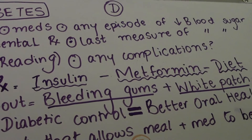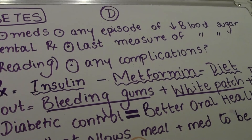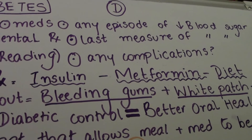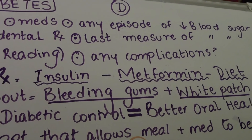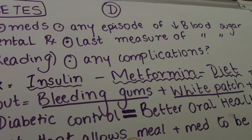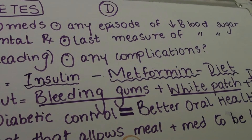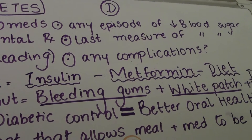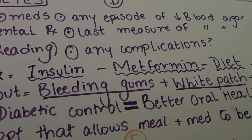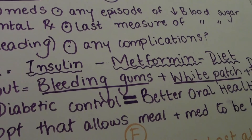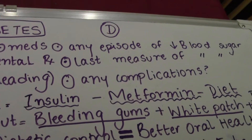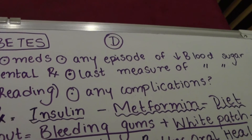Ask if they've developed any complications during any dental treatment because of the diabetes. With diabetes, patients are more prone to developing dry socket and impaired wound healing. So if they've had any extraction, they could say they had dry socket or a lot of pain after an extraction that their dentist linked with diabetes — that could be one of the complications they discuss.